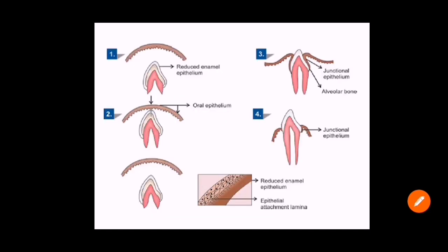Here is a pictorial representation of how junctional epithelium develops. Here is the reduced enamel epithelium and here is the oral epithelium. As the tooth erupts, there is a confluence of both: the reduced enamel epithelium and the oral epithelium fuse to form your junctional epithelium.